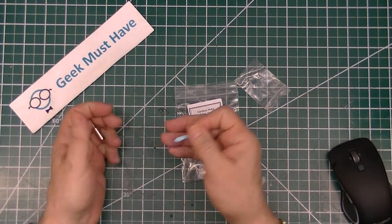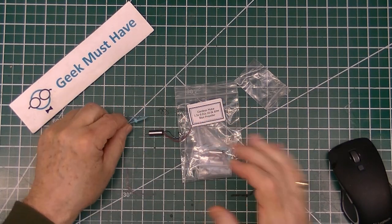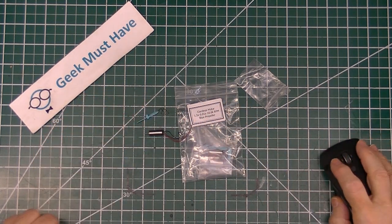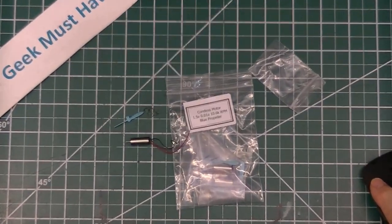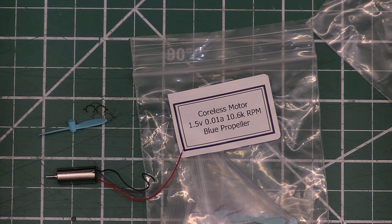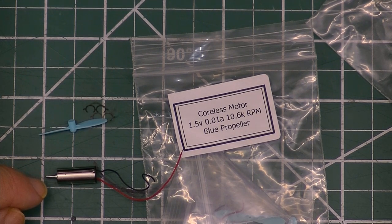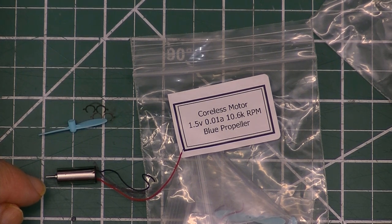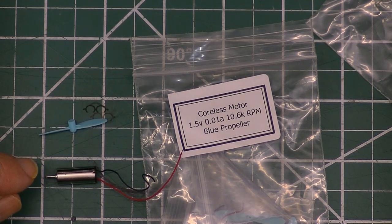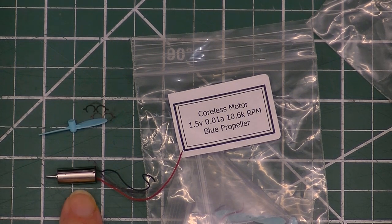This item is another one of those coreless little tiny motors. I have the wires on them already with a little tiny blue propeller. This runs at 1.5 volts and supposedly goes up to almost 11,000 RPM. It has a very low amperage drive at 0.01 amp. Probably has no torque whatsoever, but it's like a little airplane motor.